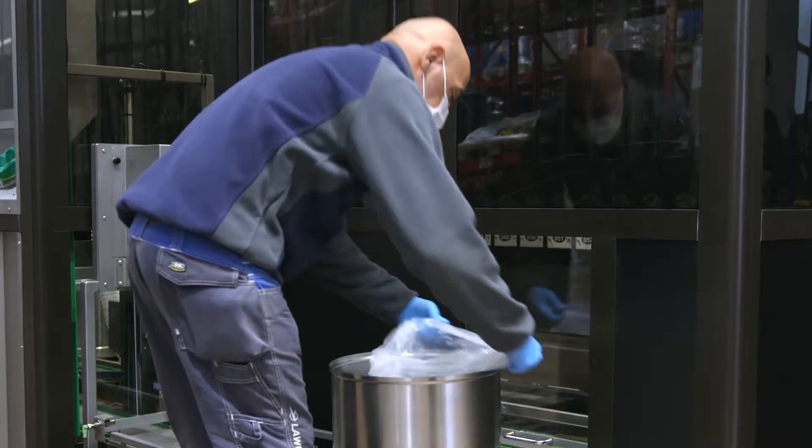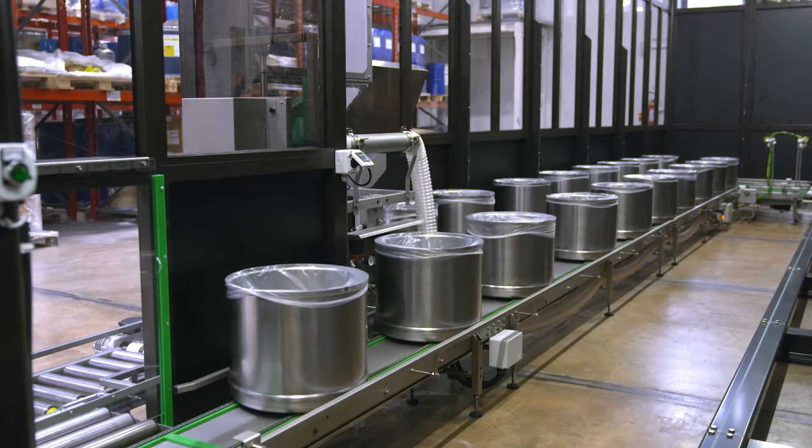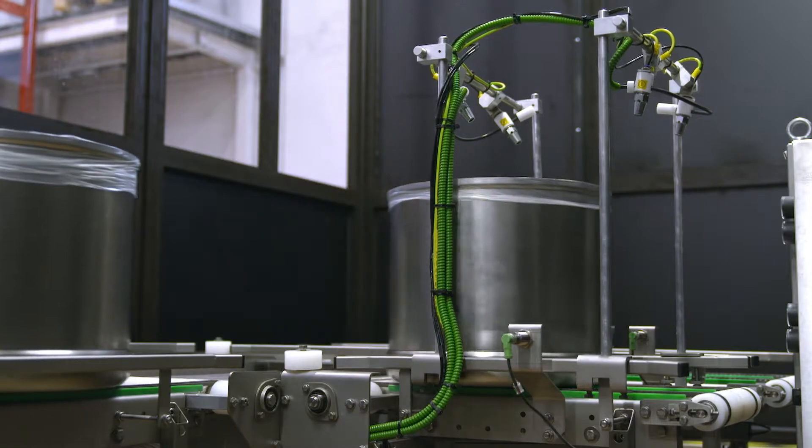The 34 litre stainless steel buckets in which the operator fits the polythene bags are loaded into the machine after passing under an ionizing system that eliminates electrostatic charges.